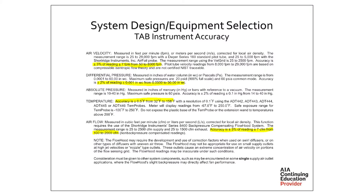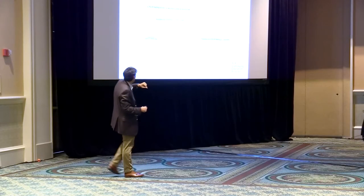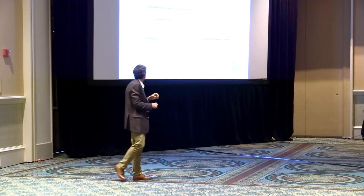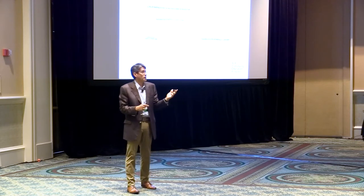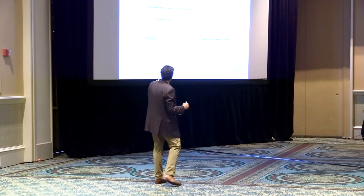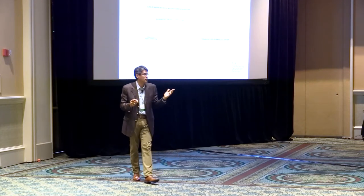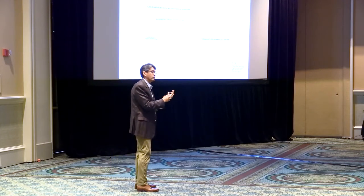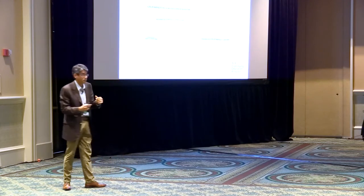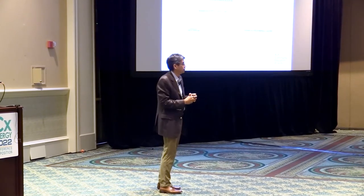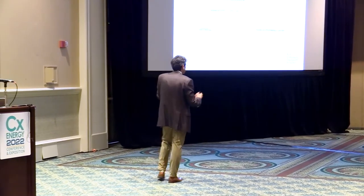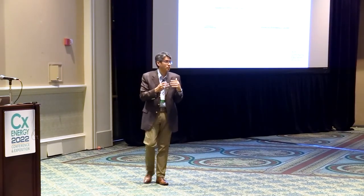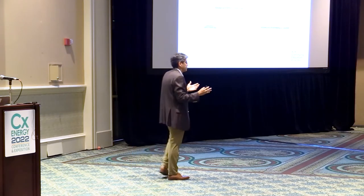On the equipment side — this is out of a Short Ridge manual, very similar numbers to Evergreen, Dwyer, etc. For airflow readings, accuracy is plus or minus 3% of reading plus or minus 7 CFM from 100 to 2,000 CFM. At 100 CFM: 3% is 3 CFM plus 7 CFM equals plus or minus 10% accuracy. So at low airflows you're at plus or minus 10%. Higher velocities and higher airflows give more accurate readings. This is a big concern for outdoor airflows, DOAS systems, and low-flow applications like induction diffusers where you might have 40 CFM coming in — that's a tough airflow measurement.